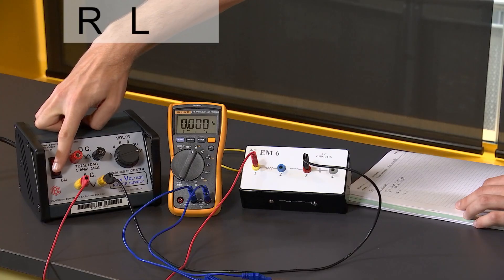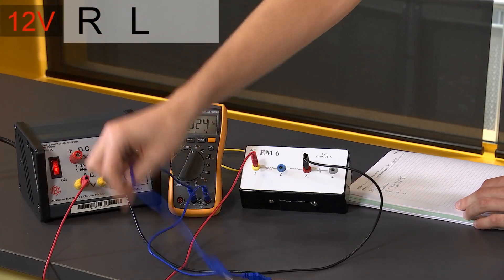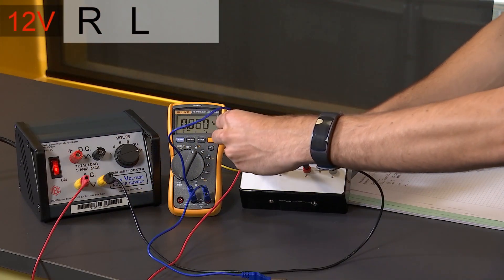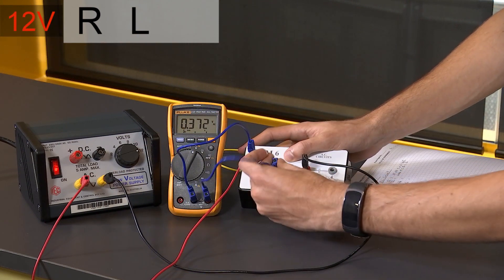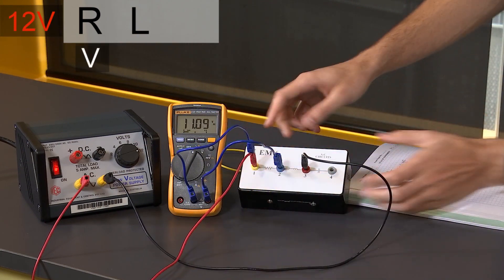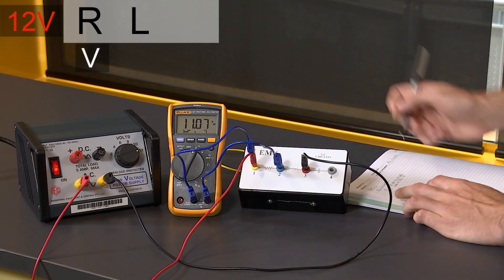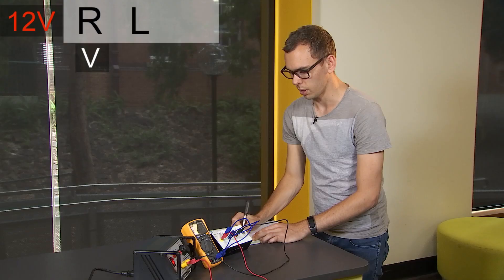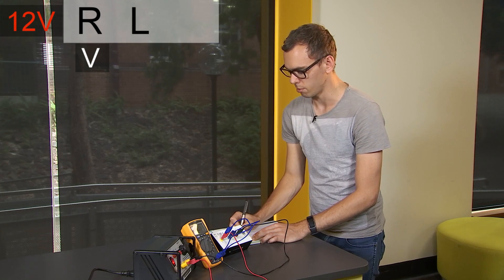I'm going to switch on the power supply and connect these leads to pins one and two to measure the voltage drop across the resistor and record that in my lab book: 11.07 plus or minus 0.01 volts.